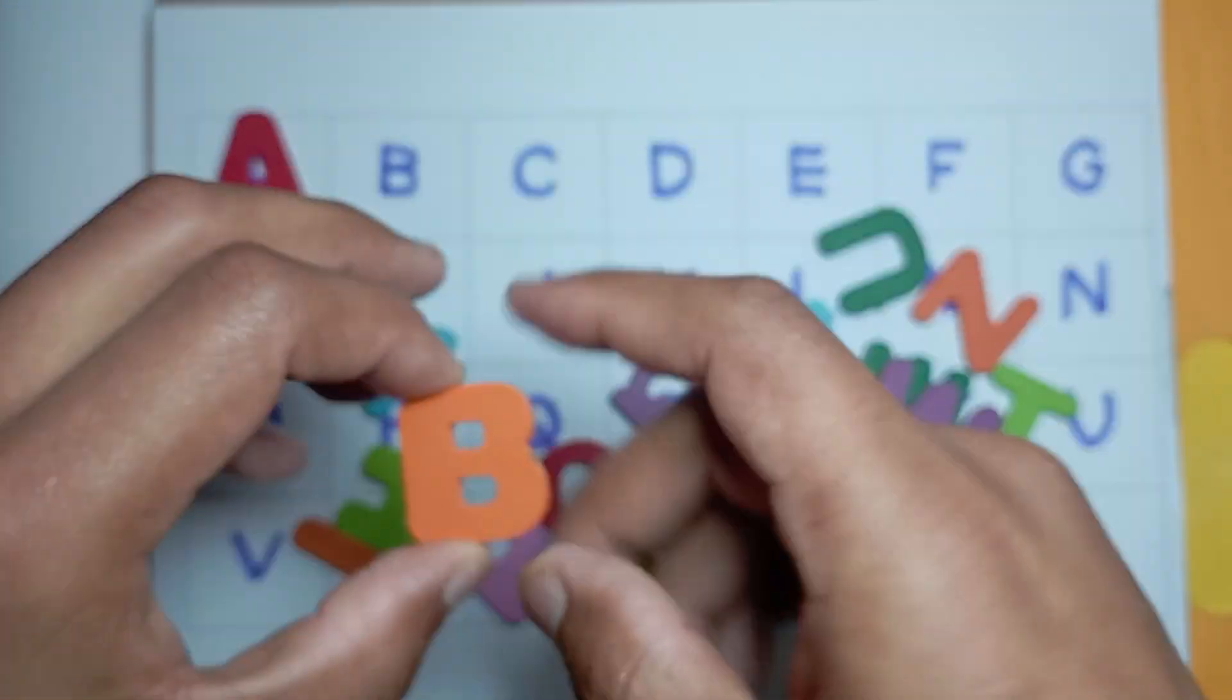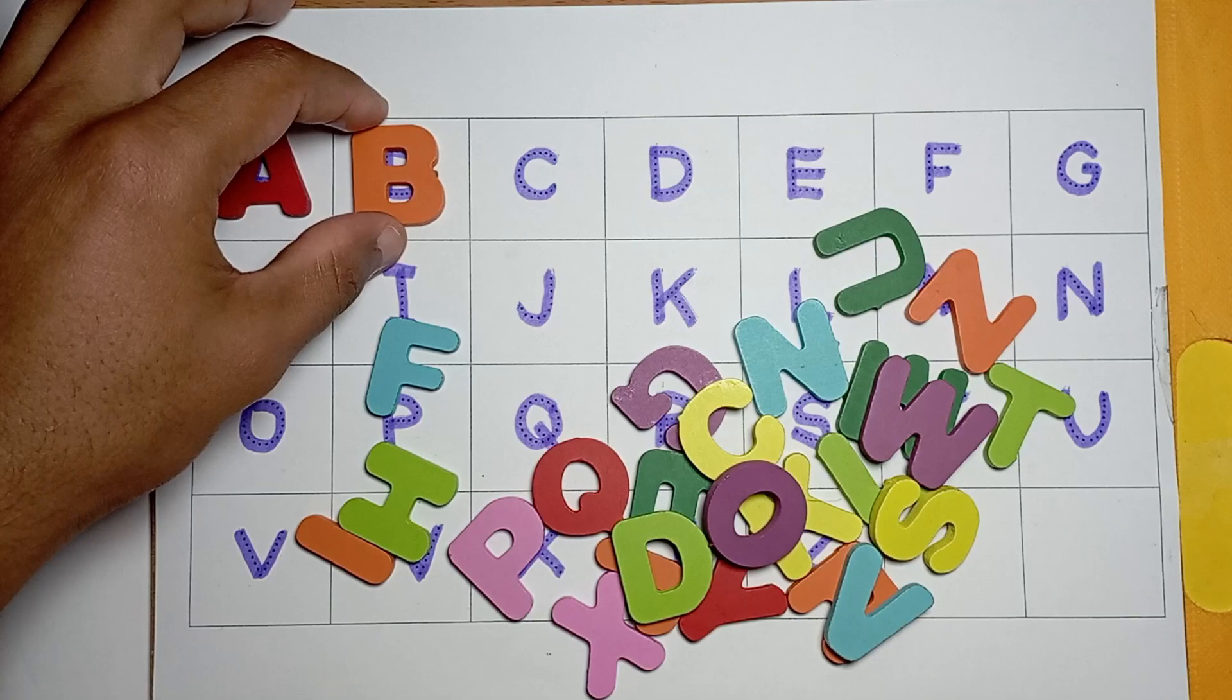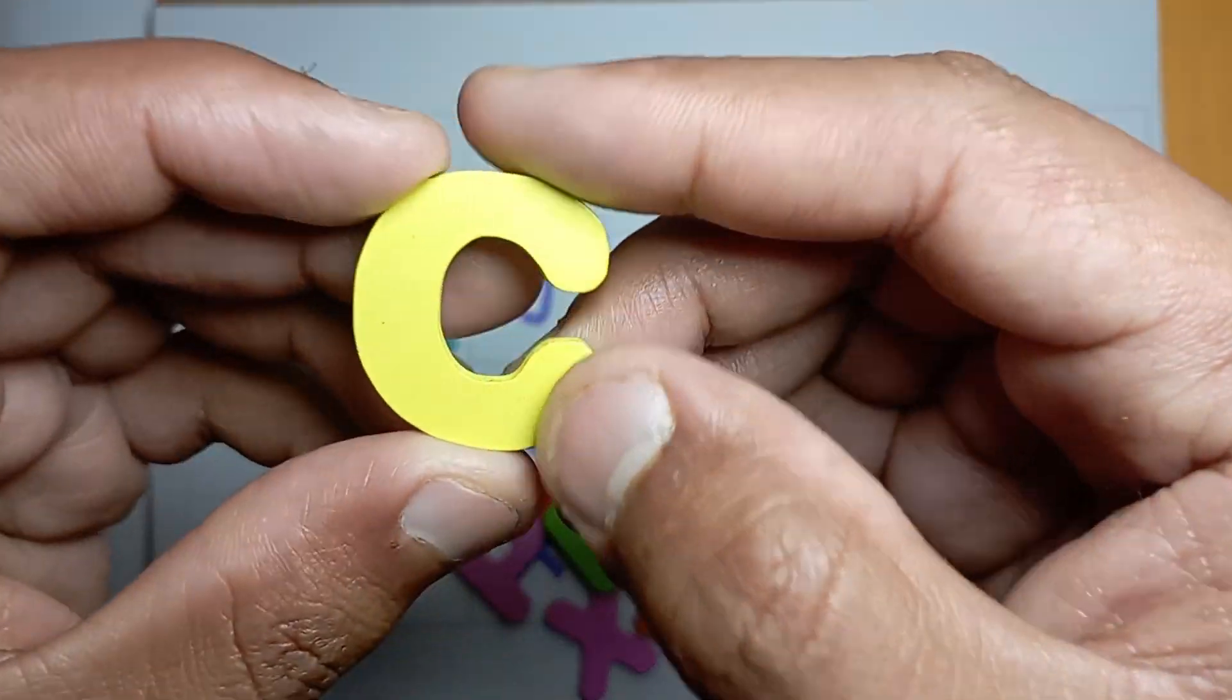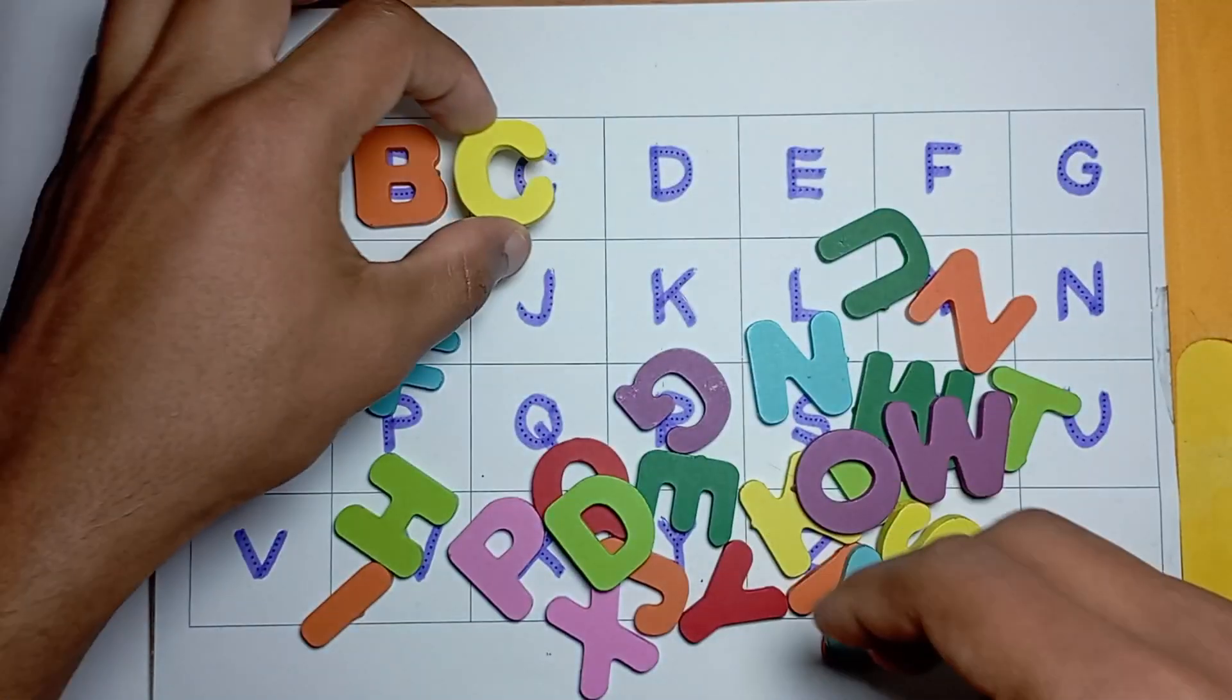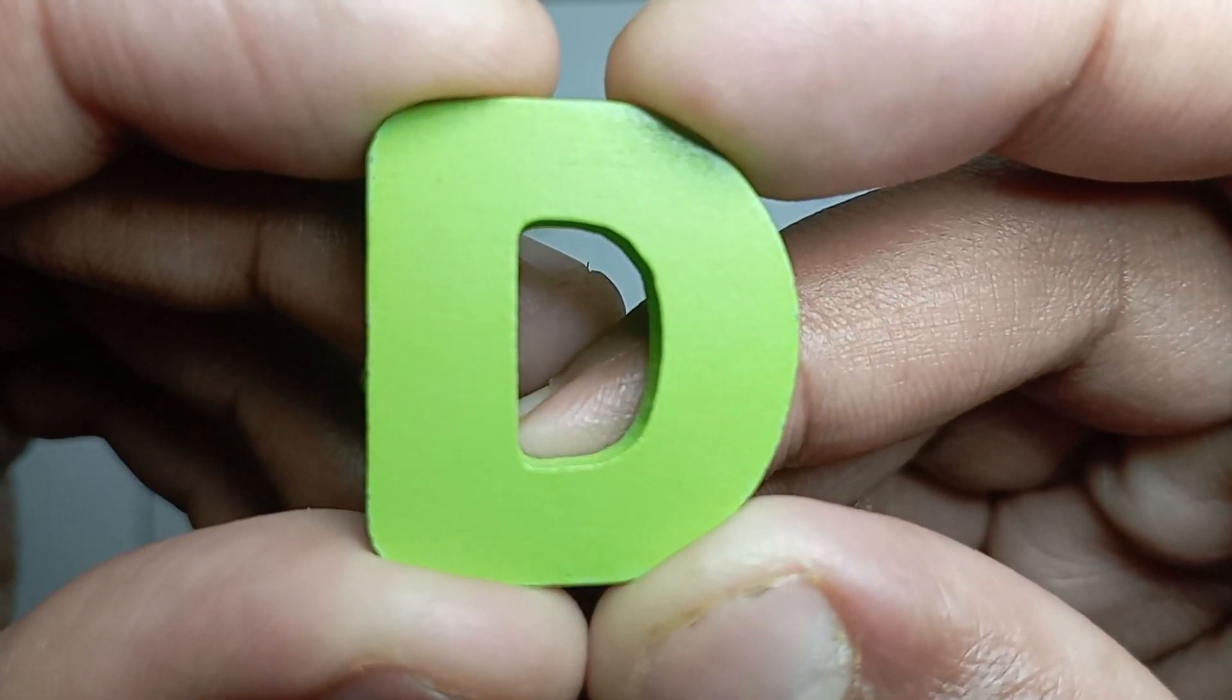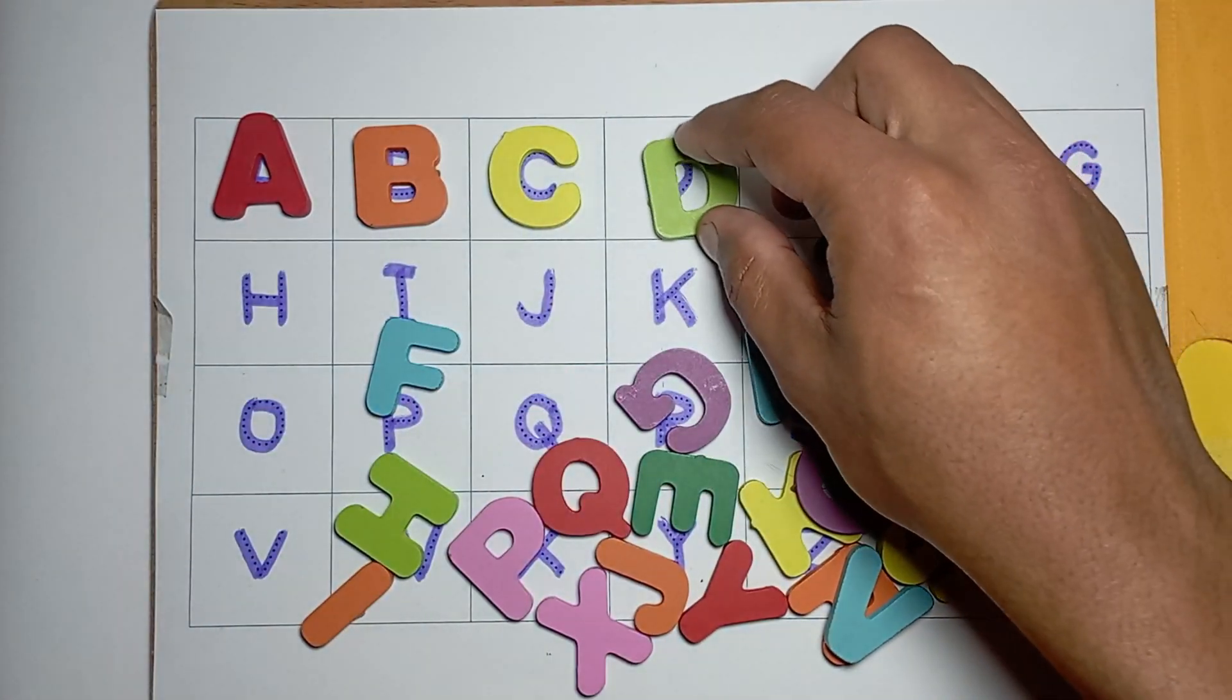B for ball, B for ball. C, C for cat, C for cat. D, D for dog, D for dog.